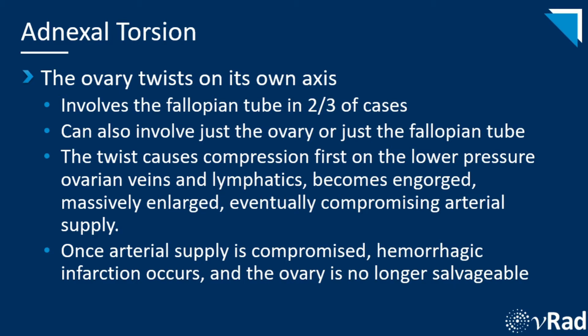Here is the definition of adnexal torsion. The ovary twists on its own axis. It involves a fallopian tube in two-thirds of the cases, so adnexal torsion is technically more accurate than ovarian torsion. It can also involve just the ovary or just the fallopian tube. The twist causes compression first on the lower pressure ovarian veins and lymphatics. The ovary then becomes engorged, massively enlarged, and eventually arterial supply is compromised. Once arterial supply is compromised, hemorrhagic infarction occurs and the ovary is no longer salvageable.